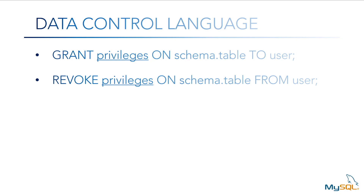So let's cover the syntax for granting a user access to a table in a schema. You type grant or revoke, and then the command privileges you want the user to be able to perform, such as select, update, insert, delete, etc. Followed by the on keyword, and then the schema and table name. You then type to or from, and then the user.